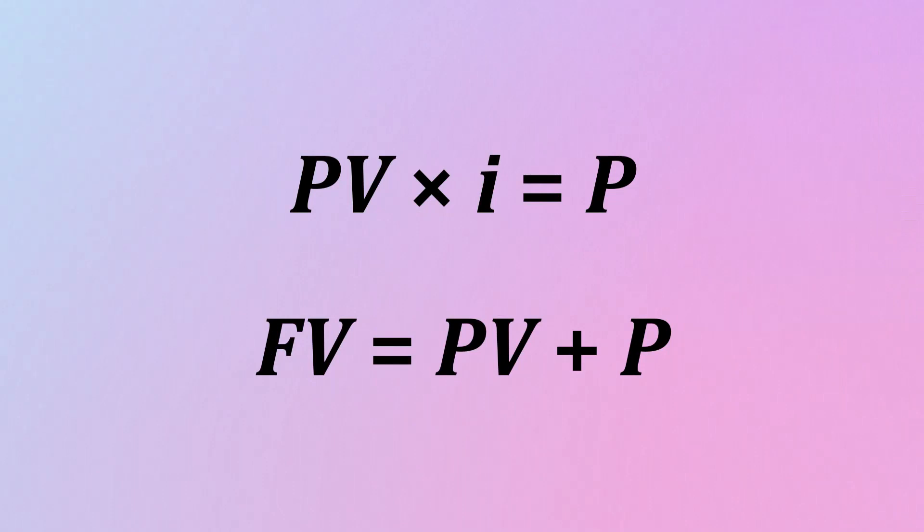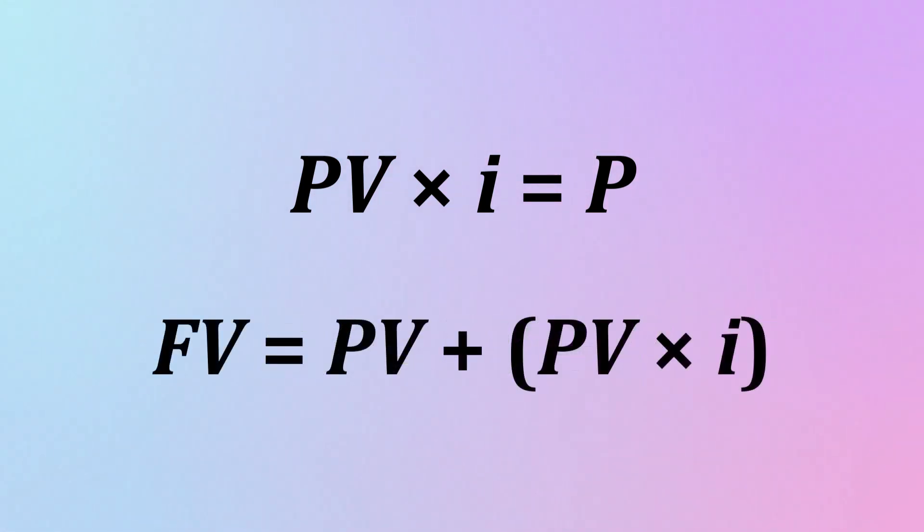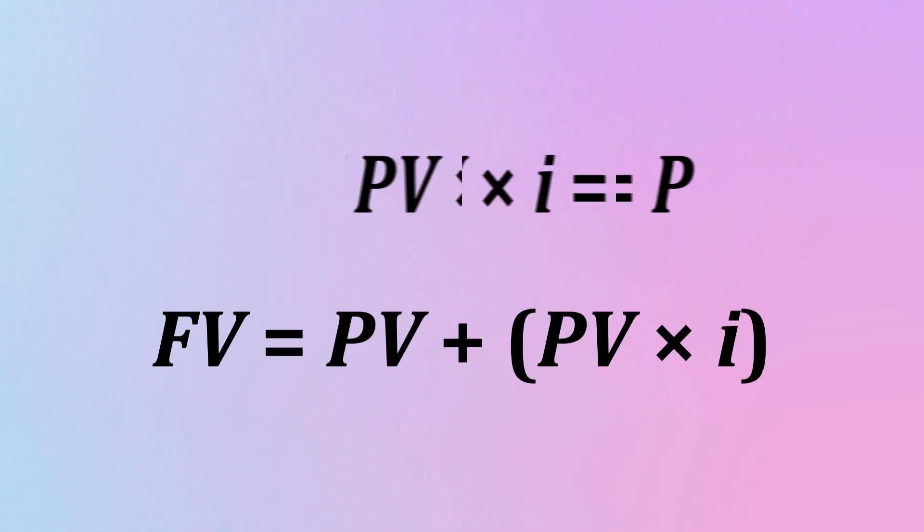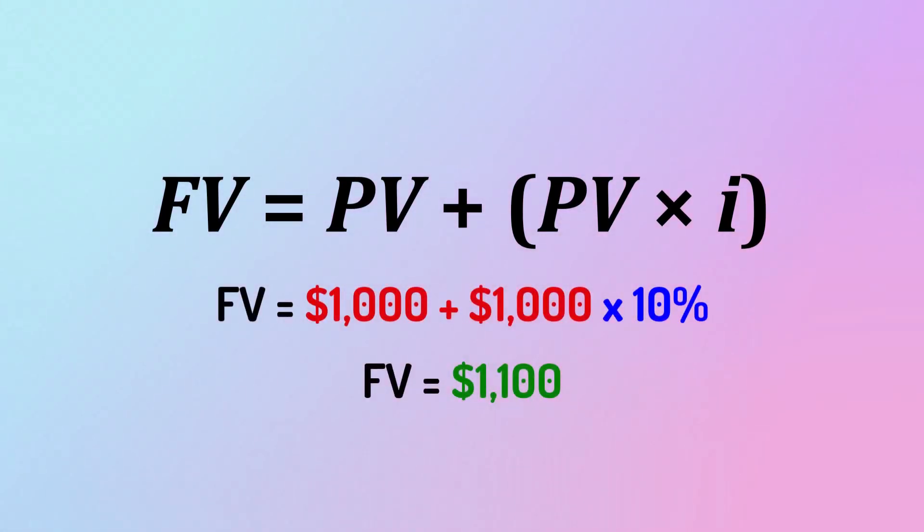Therefore, we can say that the future value after one period is always calculated using the formula FV is equal to PV plus P, or more specifically FV is equal to PV plus PV times I, since P decomposes into PV times I. Notice that the future value of this investment after a single period is really no different than finding a 10% increase of the initial investment.